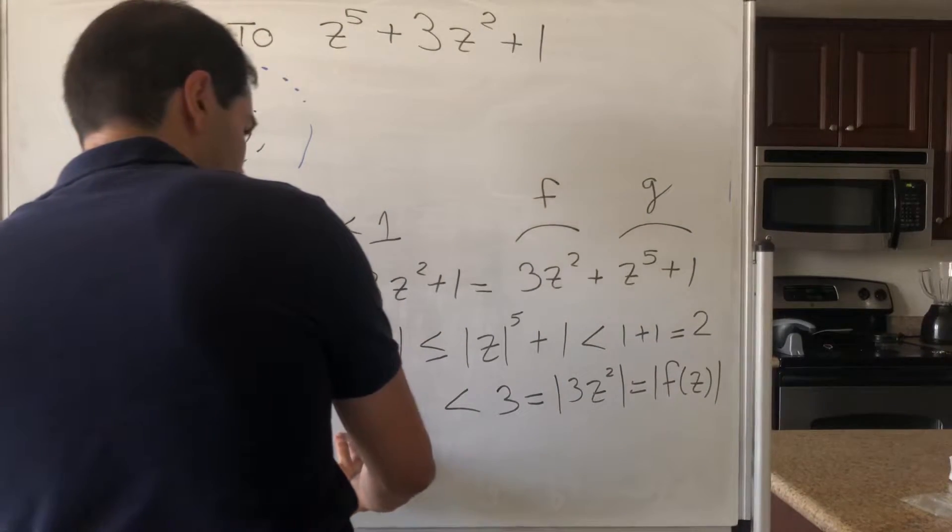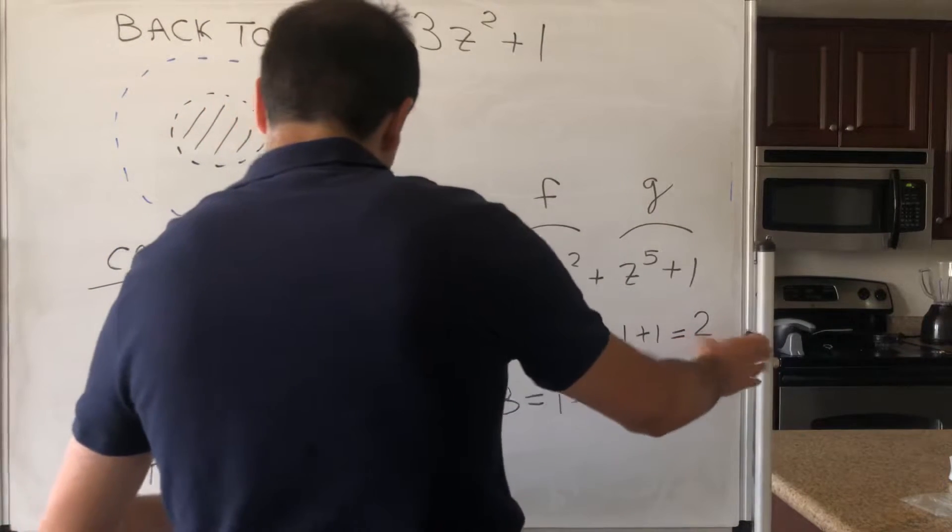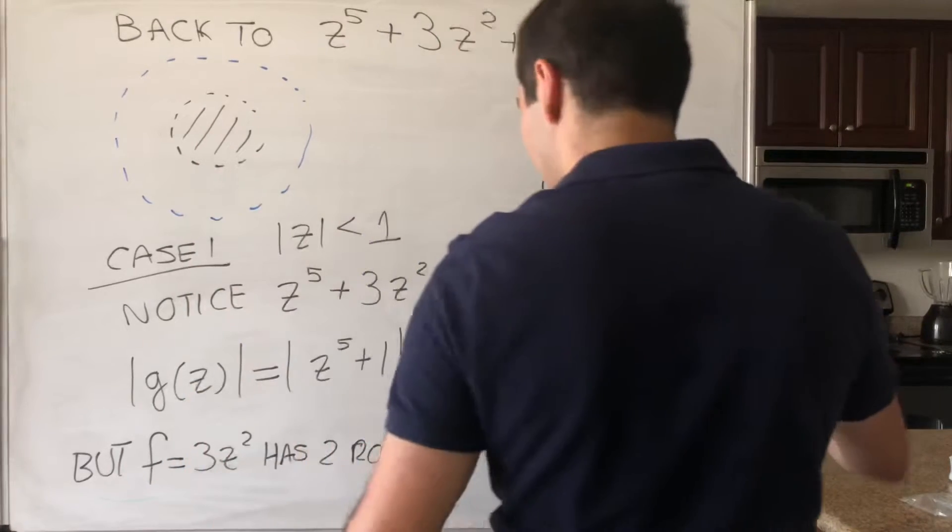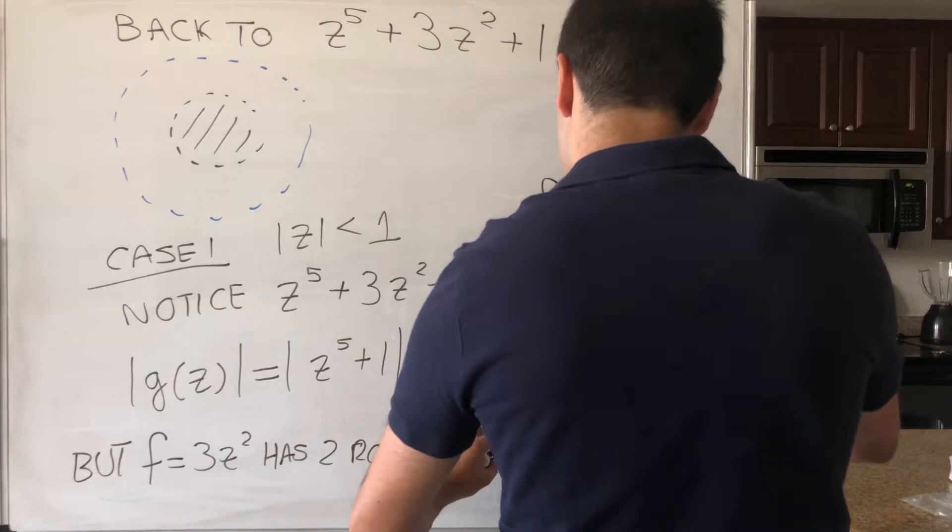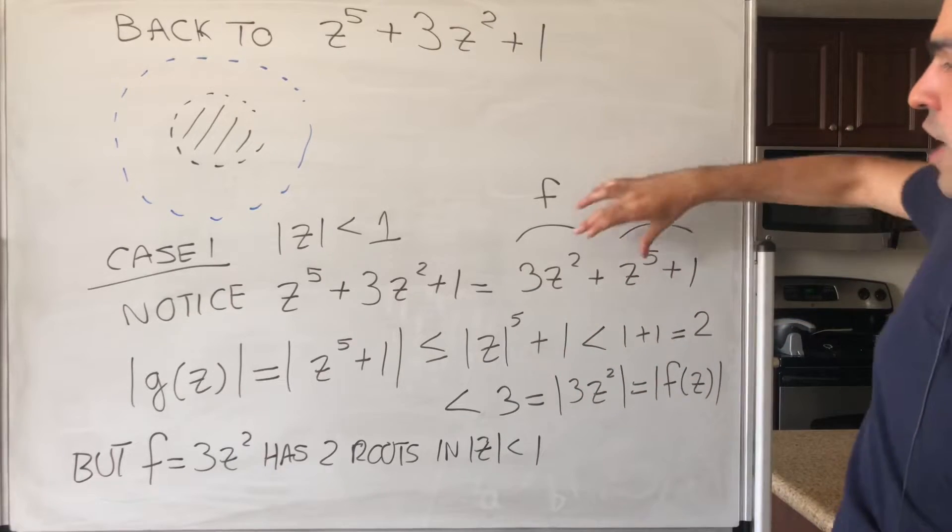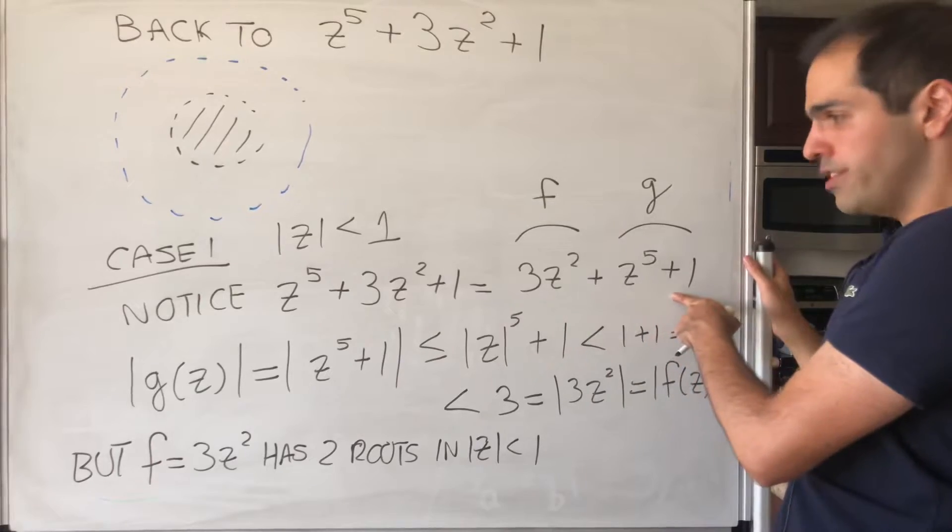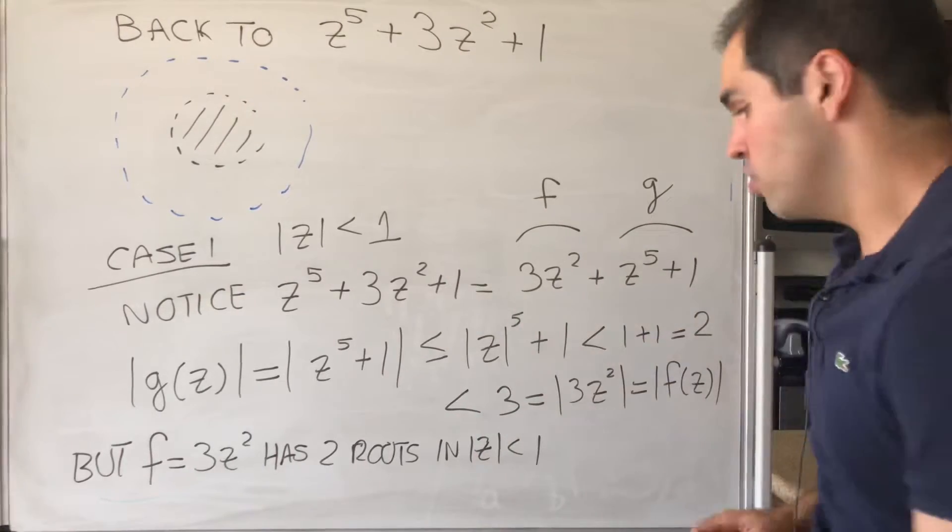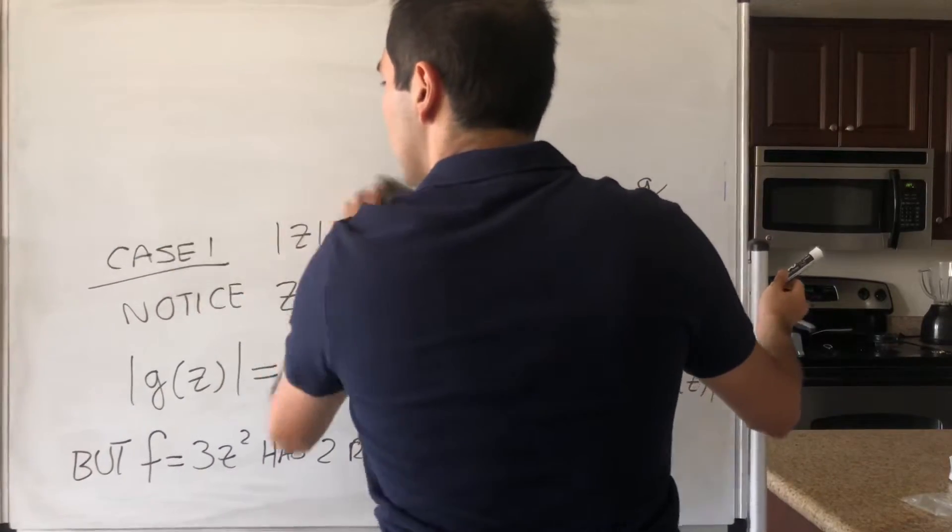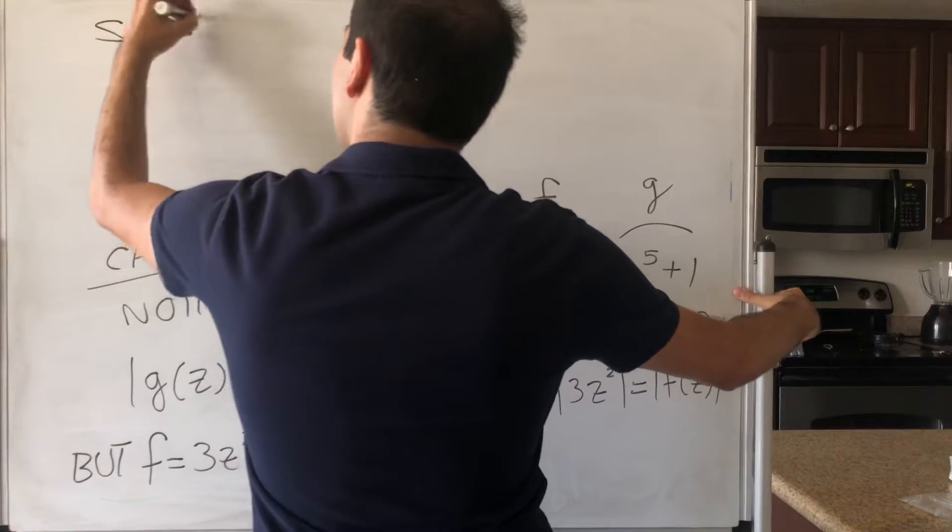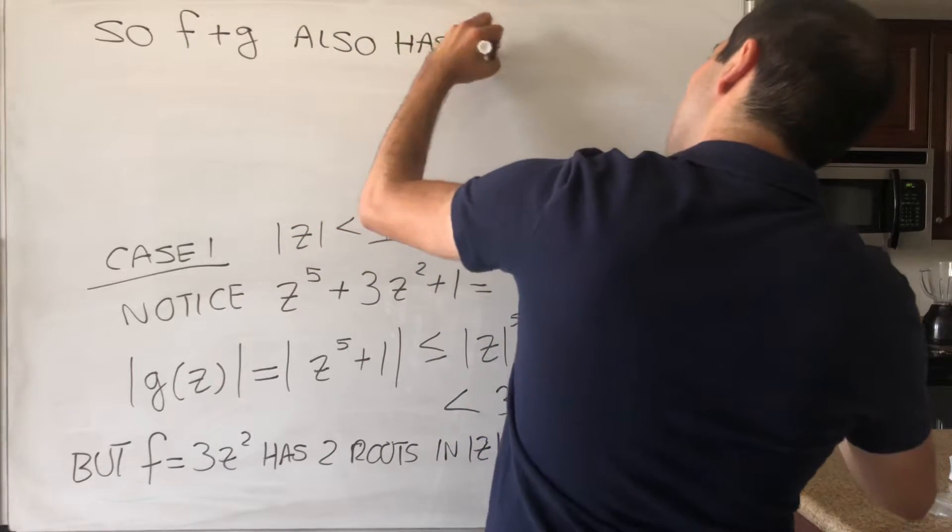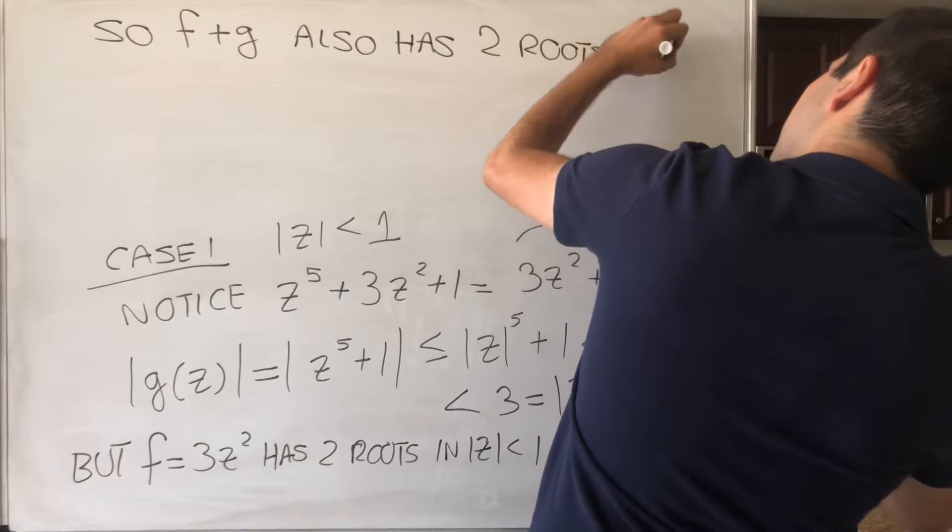But F, which again is 3z^2, has two roots in the smaller disk. So what this is saying, we have this function of two roots, and this smaller function, it will still have the same number of roots, so the sum will also have two roots inside the smaller disk. So F + G also has two roots in |z| < 1.